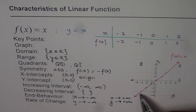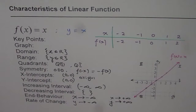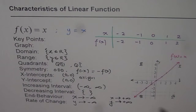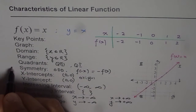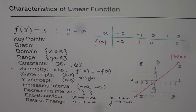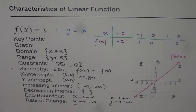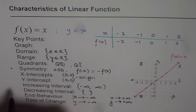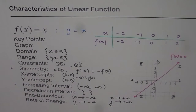The line moves from quadrant 3 to quadrant 1 and is always increasing. We have a few characteristics of this line which are very important and distinguish it from other functions. One is symmetry — it has odd symmetry. Second, it goes through the origin. Third, it is always increasing.